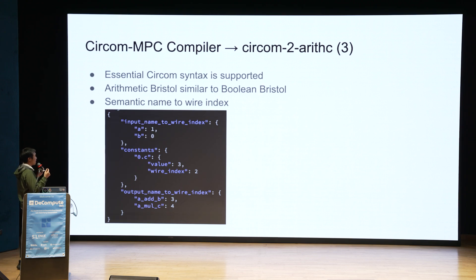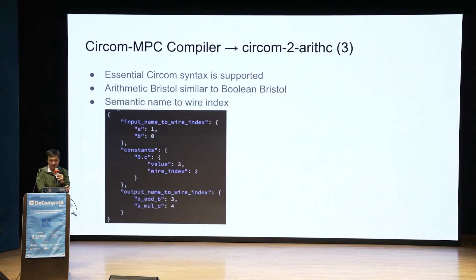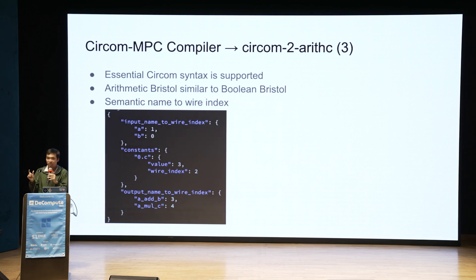We have semantic name to wire index mapping. When you are using this format it is very difficult to know what wire one or wire two are. It's more convenient if you use the name of the wire described in CIRCOM and have a mapping, so that when you read inputs or ask for input from the parties doing the MPC, you can just tell them: you need to input the secret for this variable by name.